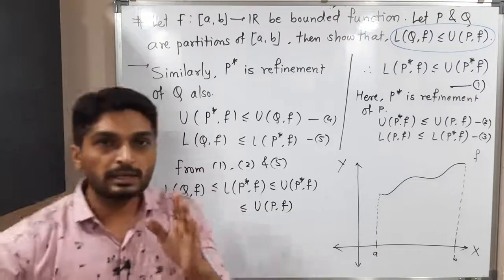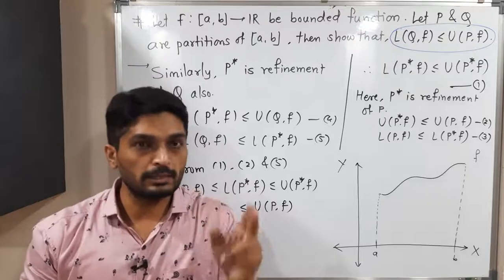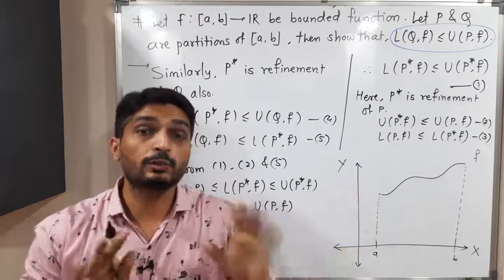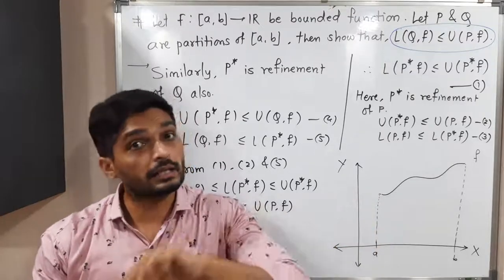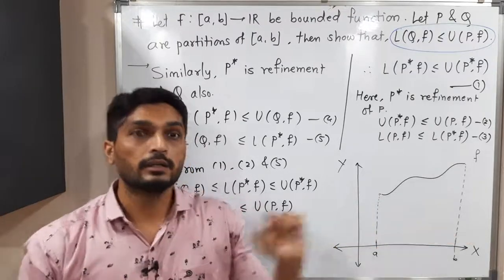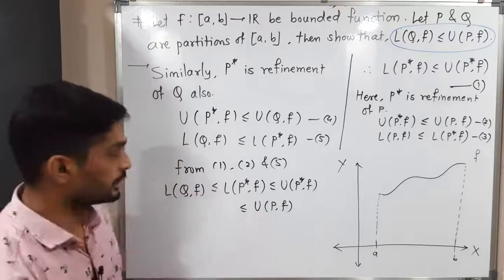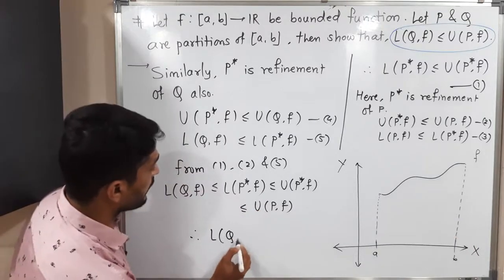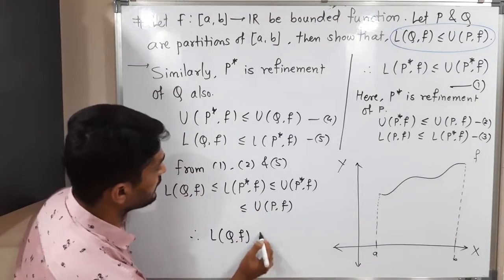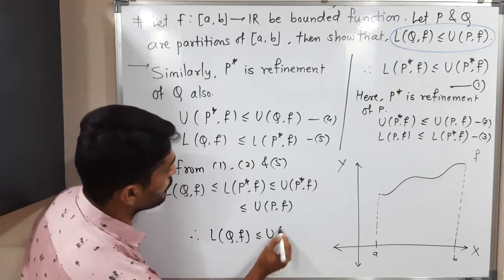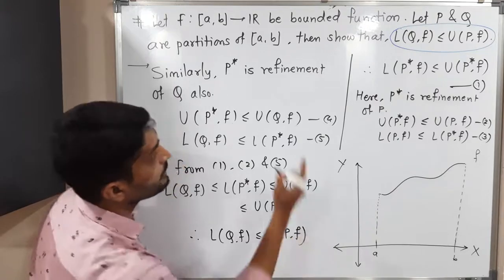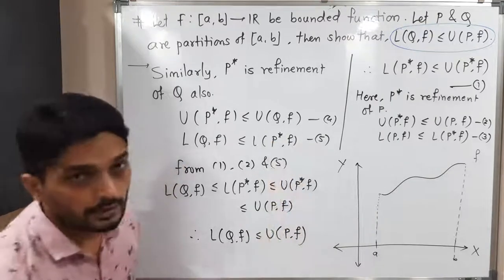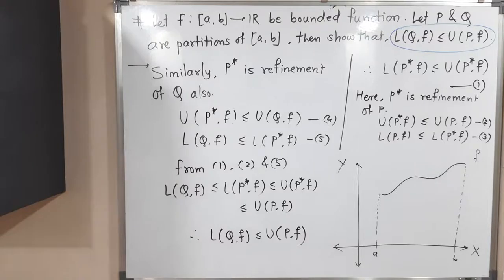So since the first term is less than or equal to the last term, therefore L(Q, F) ≤ U(P, F), and in this way we have proved the required inequality. Make a screenshot of it. Thank you, bye.